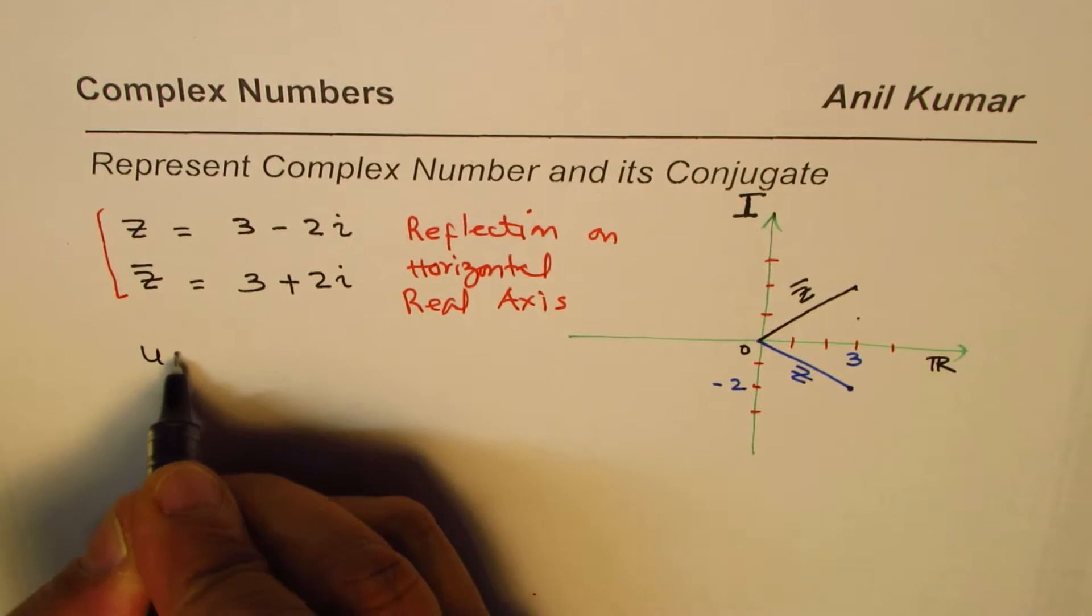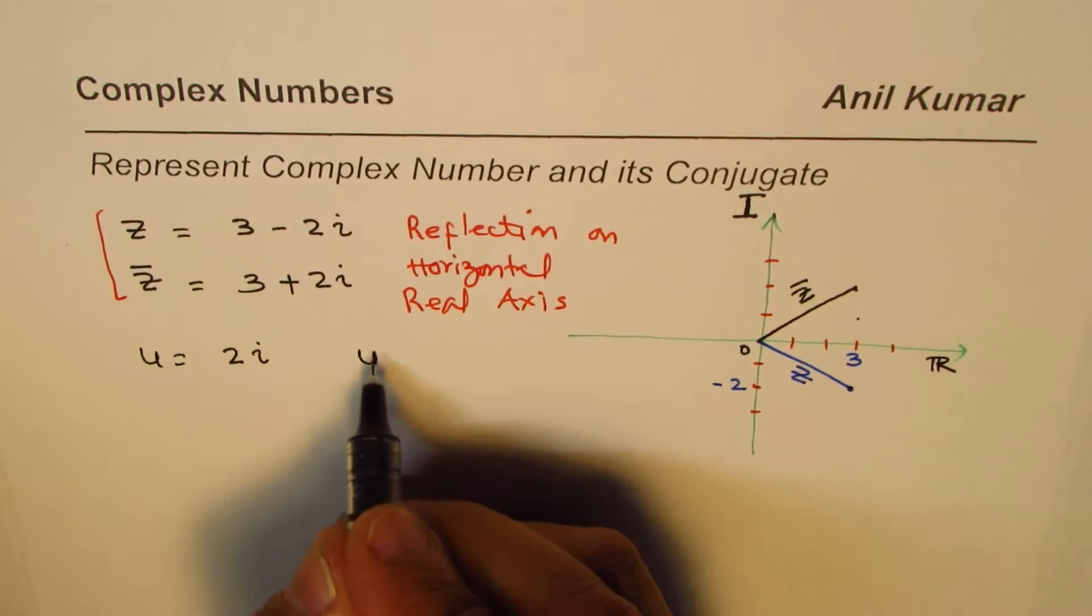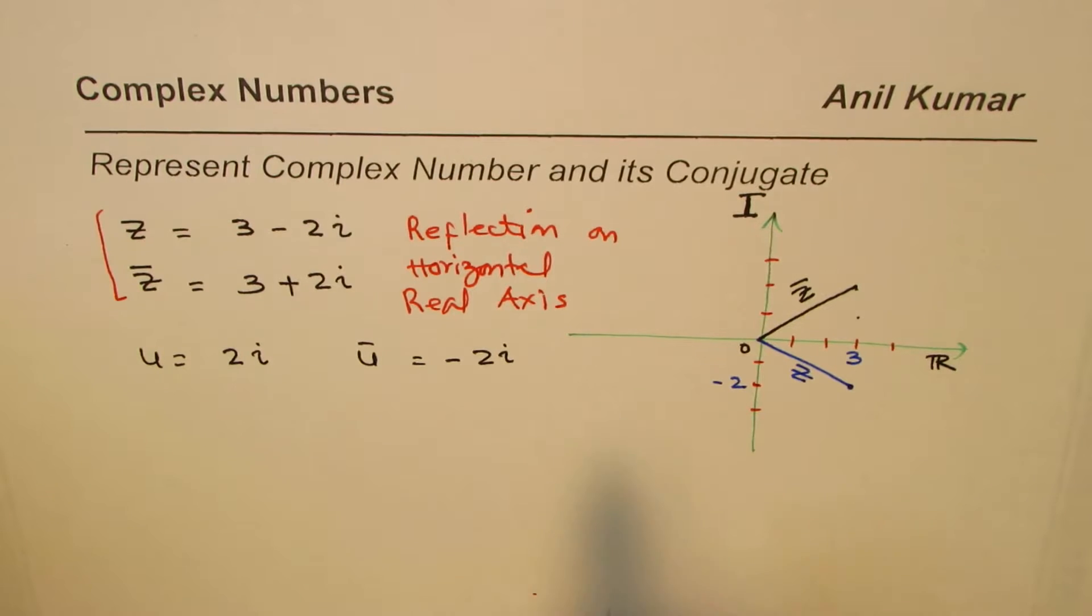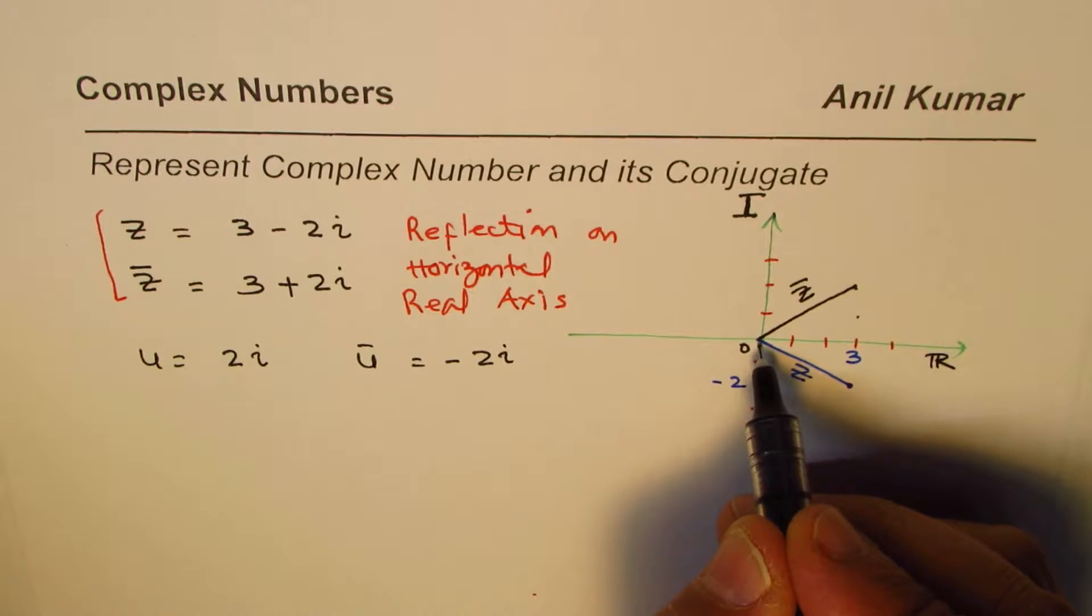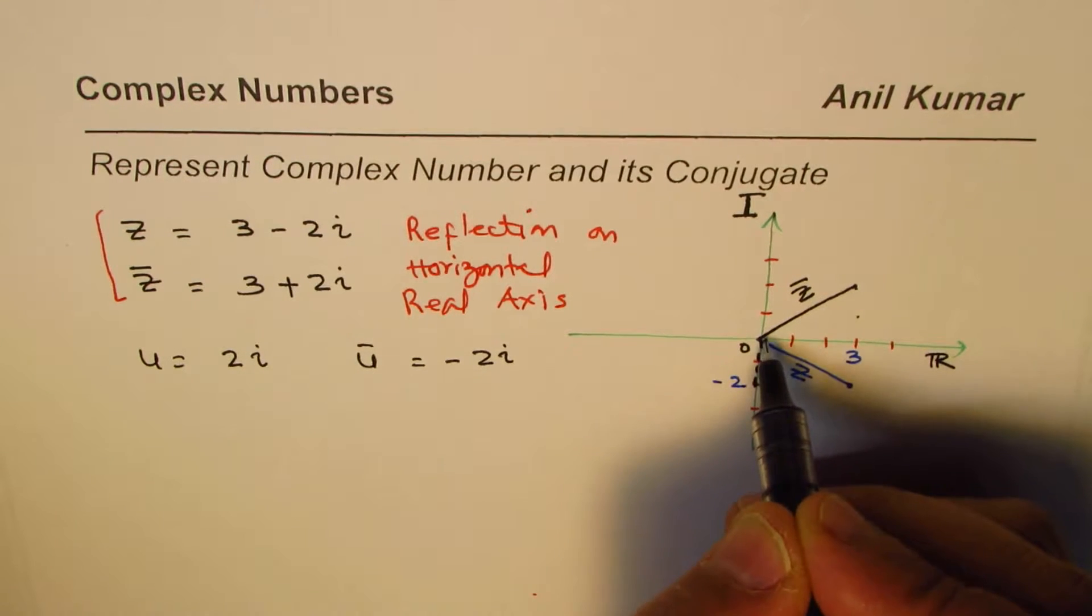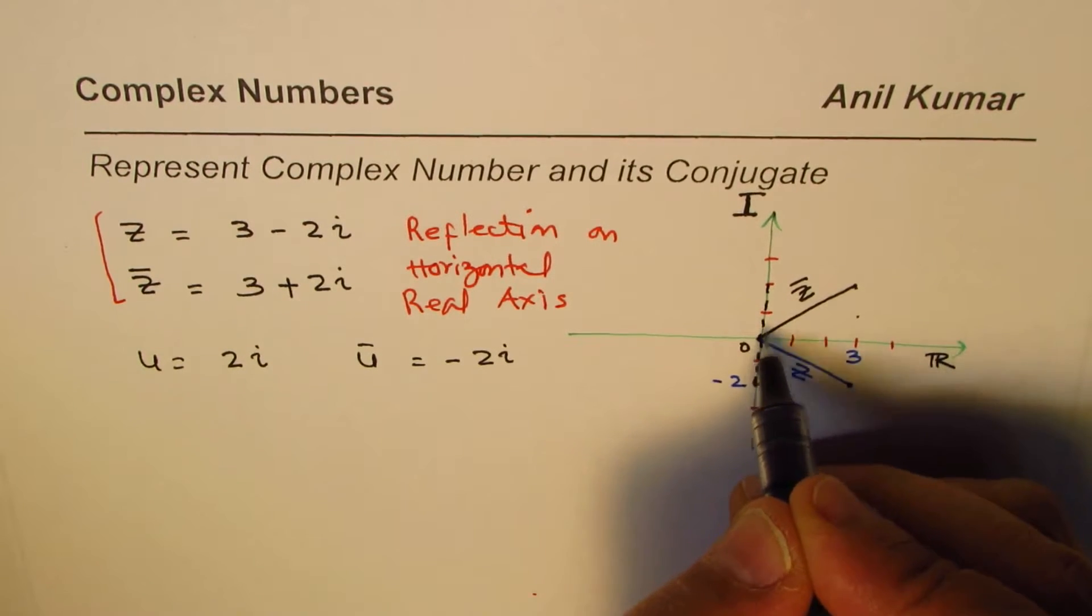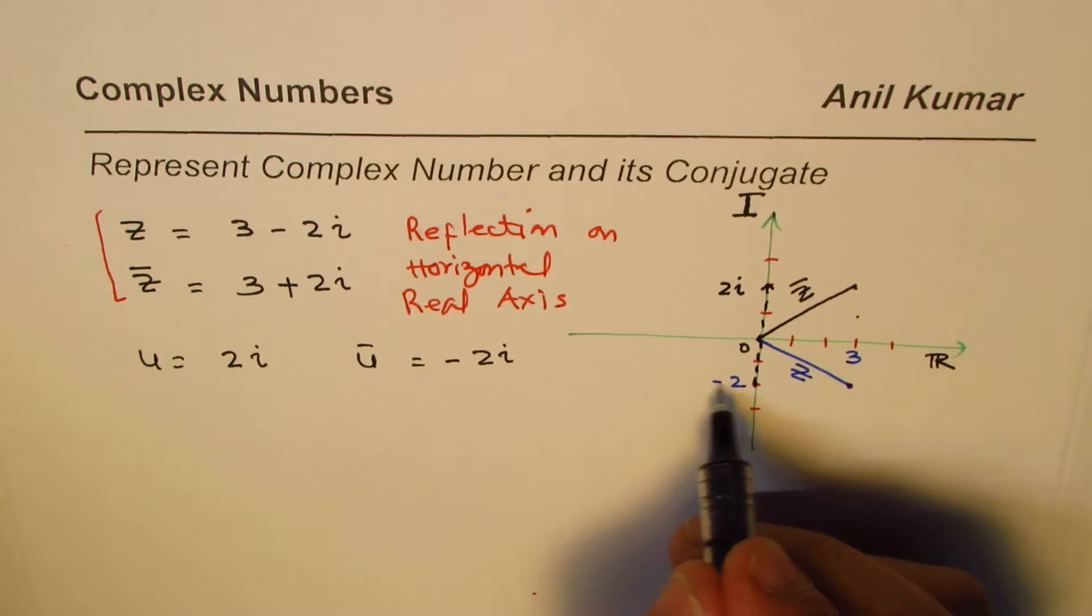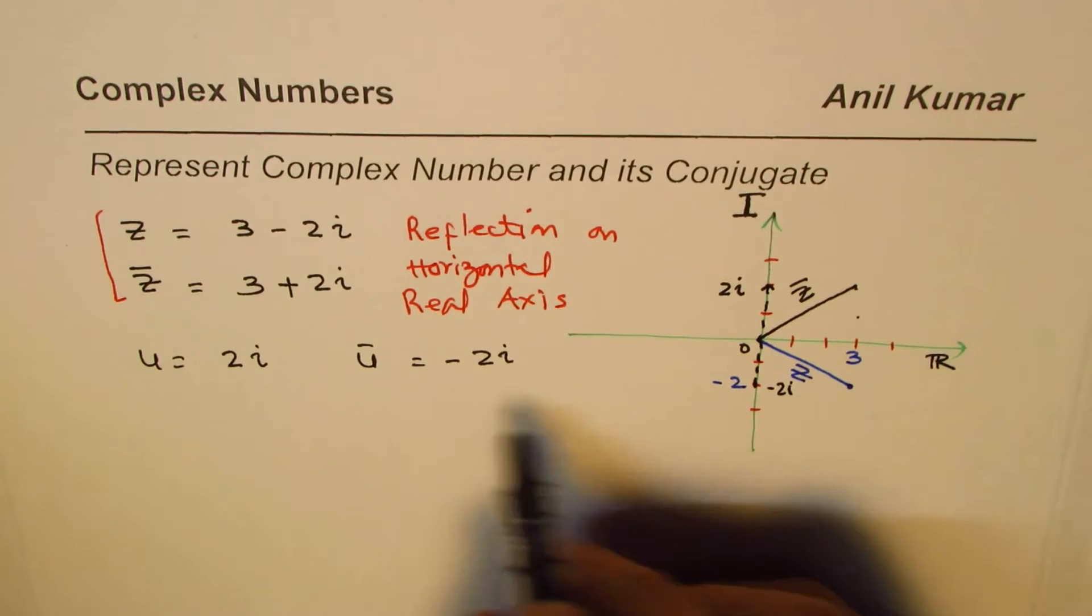Let's take a few more examples. Let's say vector u is 2i. In that case, the conjugate will be -2i. 2i is two units up. Let me draw 2i like this. So this is 2i, and its reflection becomes -2i down here. So it works.